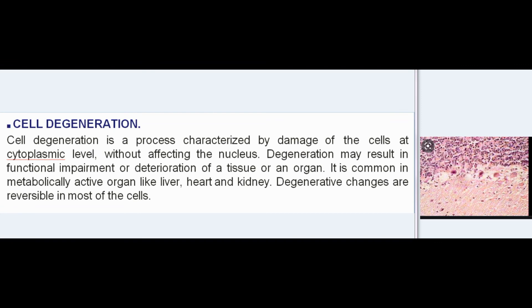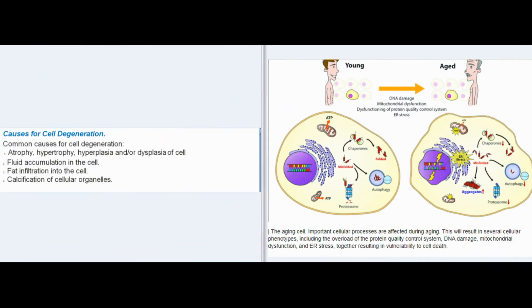Cell degeneration is a process characterized by damage of cells at the cytoplasmic level without affecting the nucleus. It may result in functional impairment or deterioration of a tissue or organ. It is common in metabolically active organs like liver, heart, and kidney. Degenerative changes are reversible in most cells. Common causes for cell degeneration include atrophy, hypertrophy, hyperplasia, and/or dysplasia of the cell, fluid accumulation in the cell, fat infiltration into the cell, and calcification of cellular organelles.